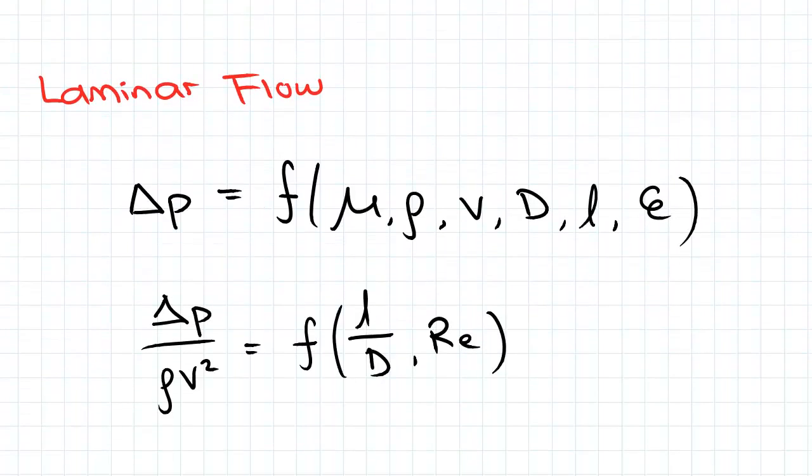Now in the previous video I breezed over a function that distinguishes pipe flow from open channel flow, and this function included six variables: dynamic viscosity, density, velocity, diameter, length, and roughness.